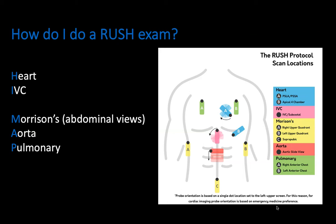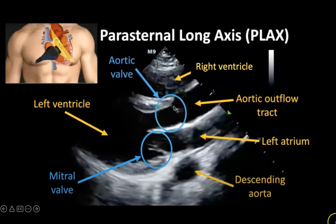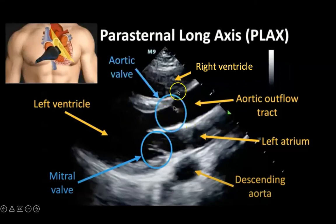My explanation on how to generate each image and the normal anatomy seen in each scan is going to be relatively brief. If you need more of a refresher on this information, please refer to the corresponding videos on the Cooper Ultrasound YouTube channel. Here is a still image of the parasternal long axis view of the heart. You can see the left atrium, the mitral valve, the left ventricle, the aortic outflow tract with the aortic valve, the right ventricle, and the descending aorta.